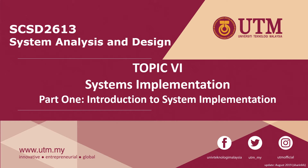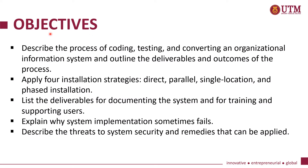The objectives of topic 6 are: to describe the process of coding, testing, and converting an organizational information system, and to outline the deliverables and outcomes of the process. The second objective is to apply installation strategies — direct, parallel, single location, and phase installation — to information systems.